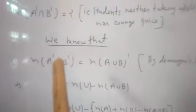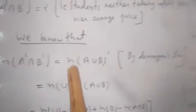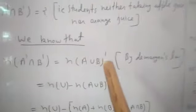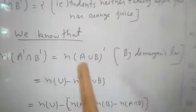So, n(A' intersection B') by De Morgan's law we know that is equal to n(A union B)', that is complement of n(A union B).